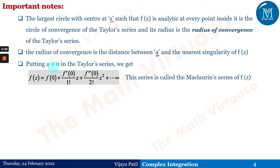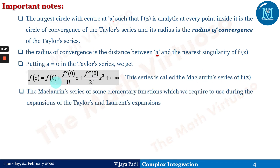Putting a = 0 in Taylor's series, we get f(z) = f(0) + f'(0)/1! · z + f''(0)/2! · z² and so on to infinity. This series is known as the Maclaurin series of f(z).